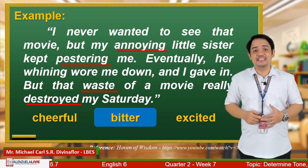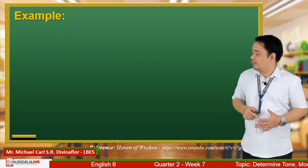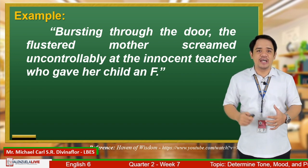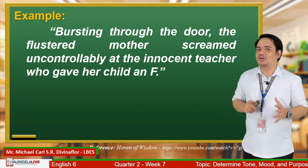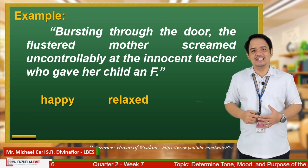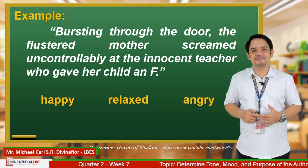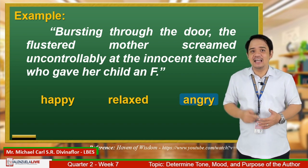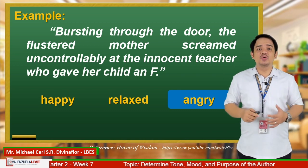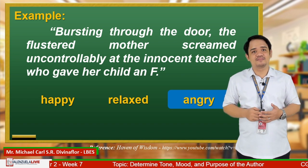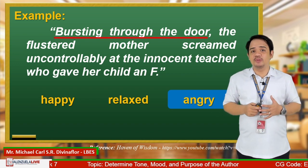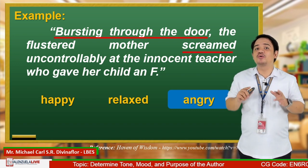Let us look into another example: 'Bursting through the door, the flustered mother screamed uncontrollably at the innocent teacher who gave her child an F.' What is the tone — happy, relaxed, or angry? The answer is angry. The clue phrases are: bursting through the door, screamed, and uncontrollably.